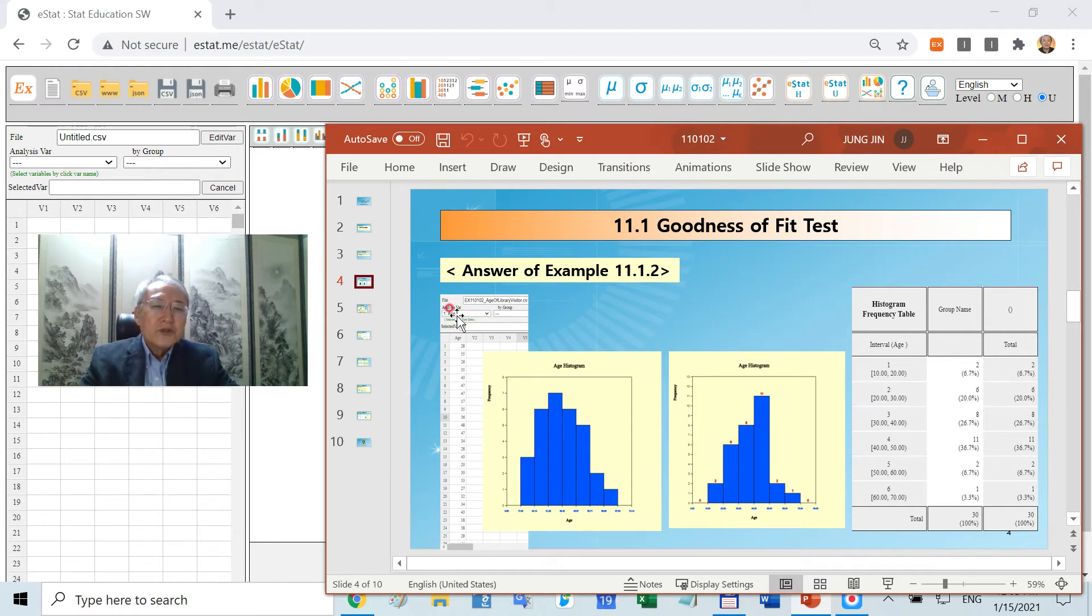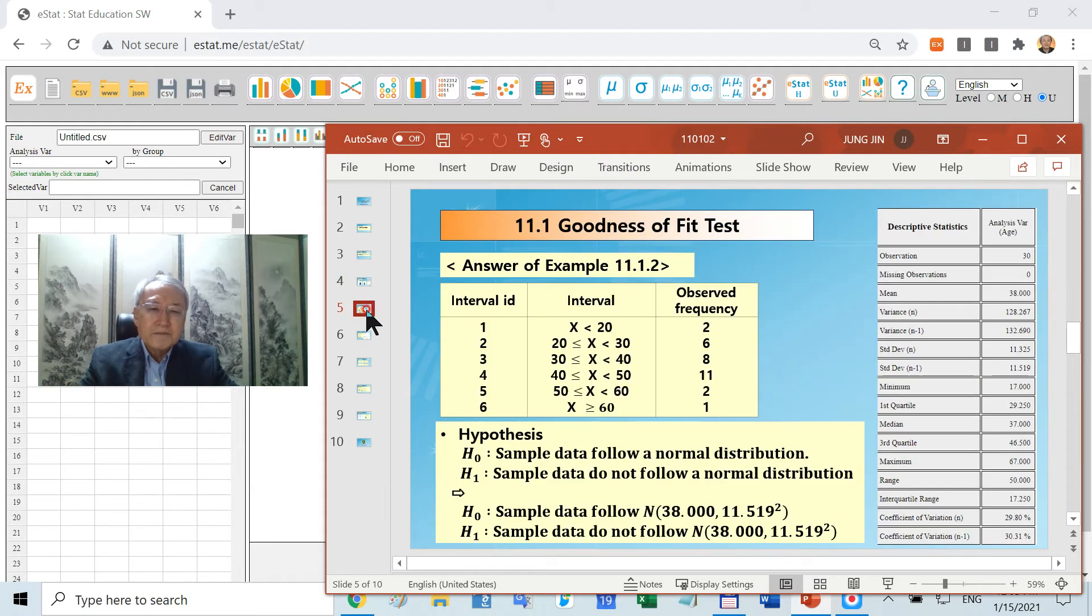In ESTAT, you can calculate the normal probability corresponding to each interval. The first interval is slightly changed - starting from negative infinity, with the last interval going to infinity.